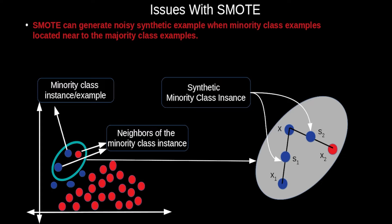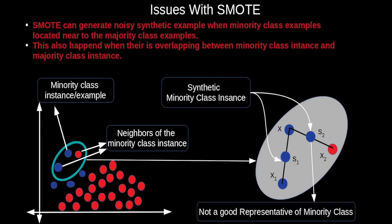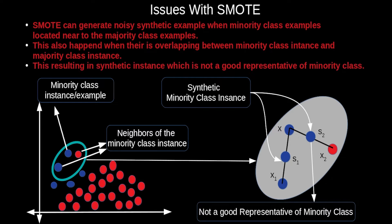This also happens when there is overlap between minority and majority class instances, resulting in synthetic examples that are not good representatives of the minority class. S2 is not a good representative because it is generated by interpolating minority class example x with majority class example x2.